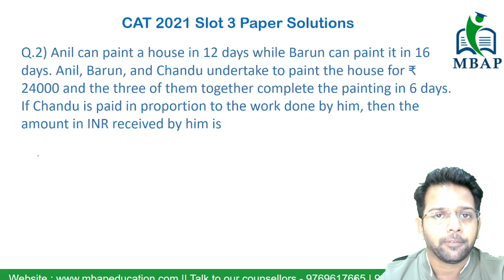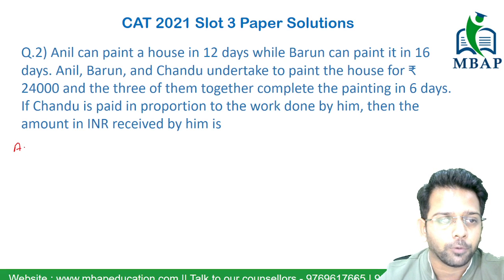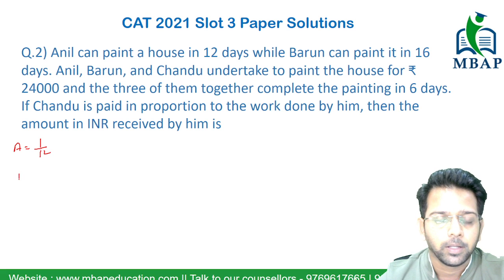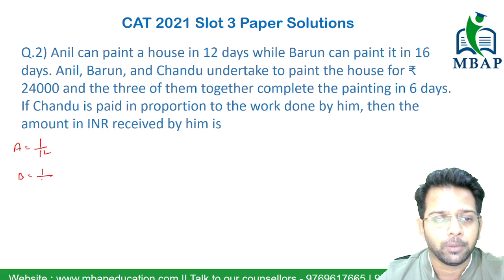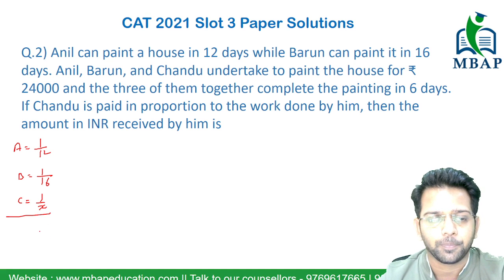Now, if Anil can do the entire work in 12 days, the proportion of work done by Anil in 1 day will be 1/12. Similarly, for B, it will be 1/16. And for C, you can assume it to be x days, so the daily work rate will be 1/x.